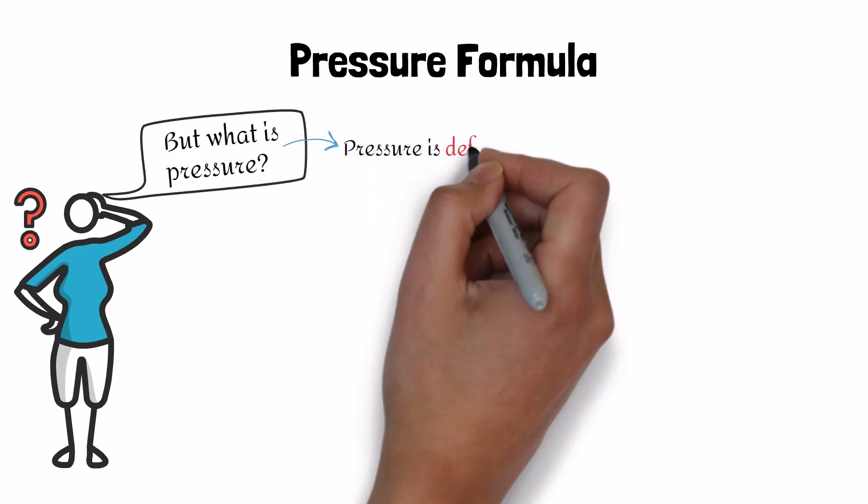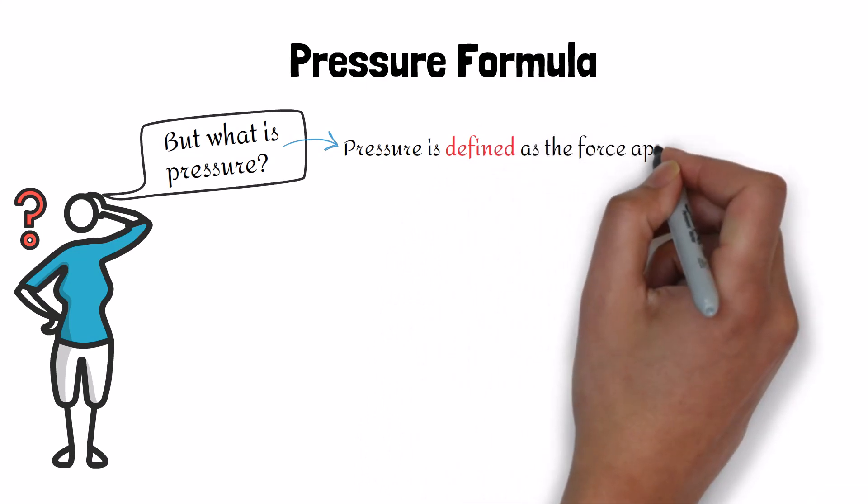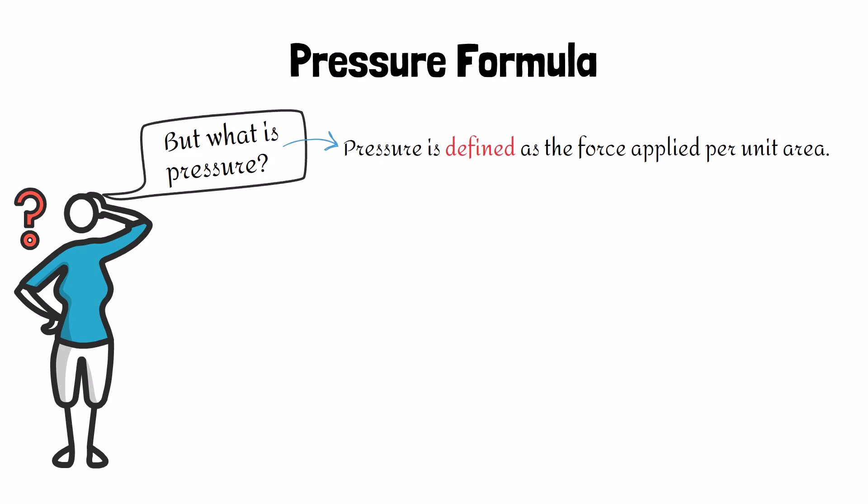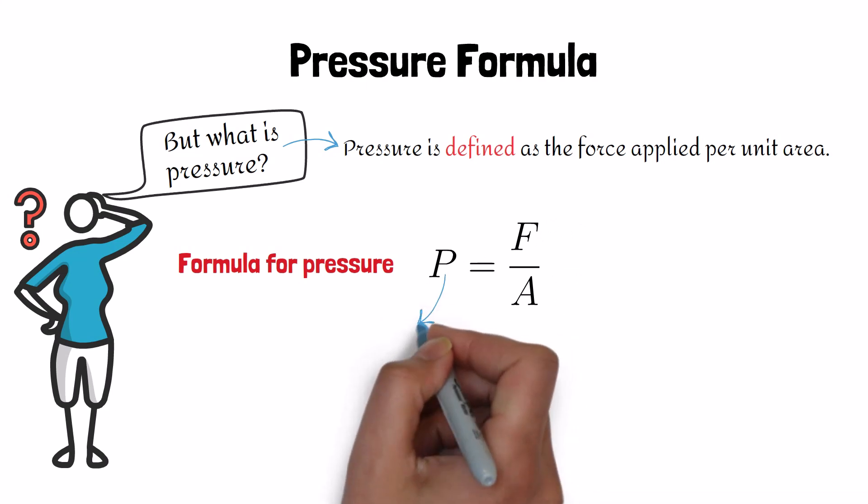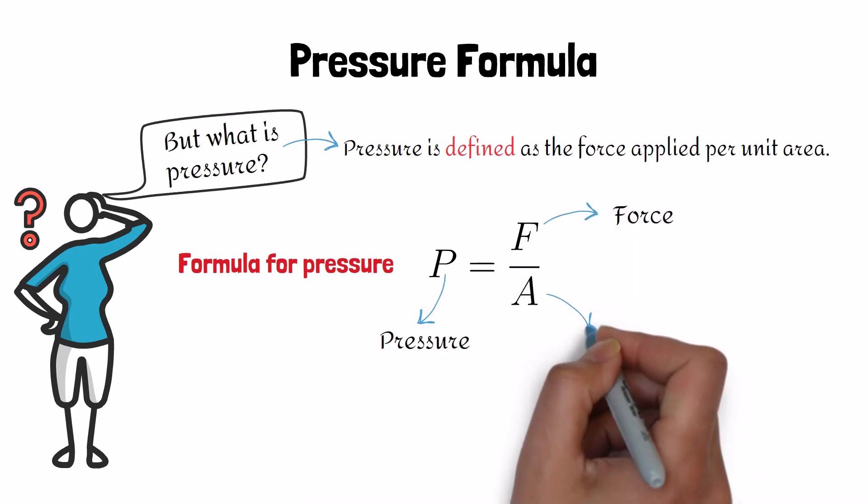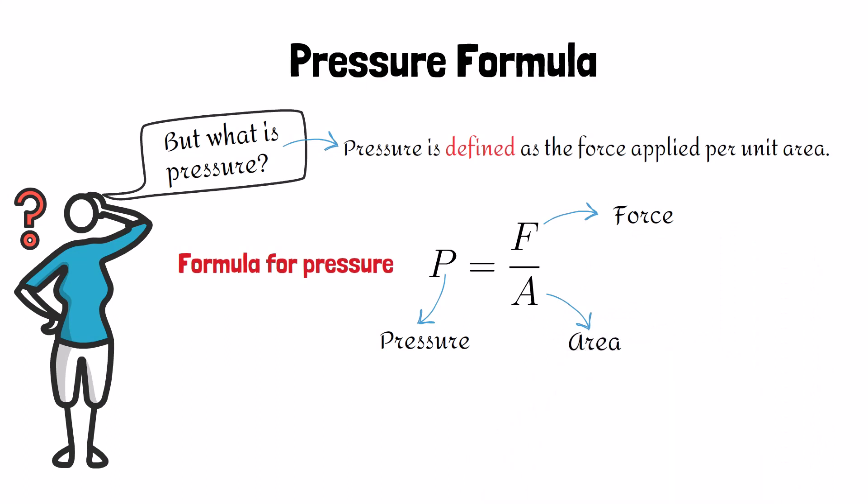In simple terms, it tells us how much force is spread over a particular area. The formula for pressure is given by equation P equals F divided by A, where P is pressure, F is force applied, and A is area. Remember this formula as P equals F divided by A.